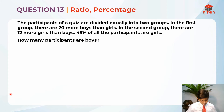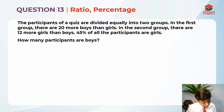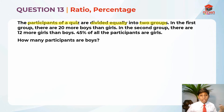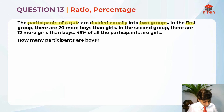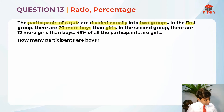Now that we have read the question, let's highlight the key information. The participants of a quiz are divided equally into two groups — so equal number in two groups. In the first group, there are 20 more boys than girls.